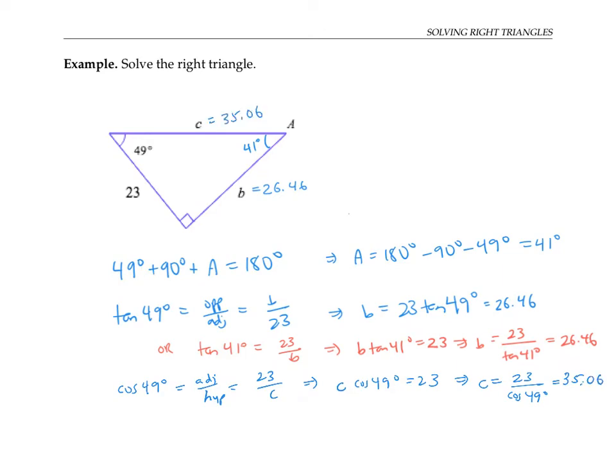Another option would be to use the Pythagorean theorem to find C. Since we know 23 squared plus B squared equals C squared. In other words, that's 23 squared plus 26.46 squared equals C squared, which means that C is the square root of that sum, which works out again to 35.06.